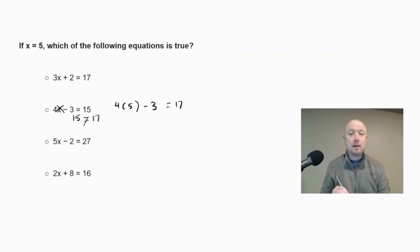Look at our third choice. We get five times five minus two. So that would be 25 minus 2, which is 23. 23 does not equal 27, so that choice is eliminated. For the fourth choice, we try two times five plus eight. That would be 10 plus 8 is 18. 18 does not equal 16.